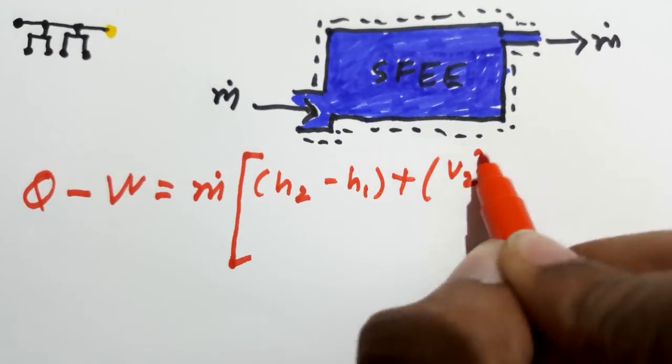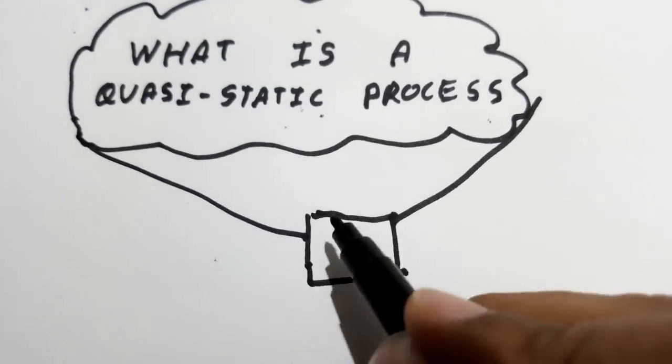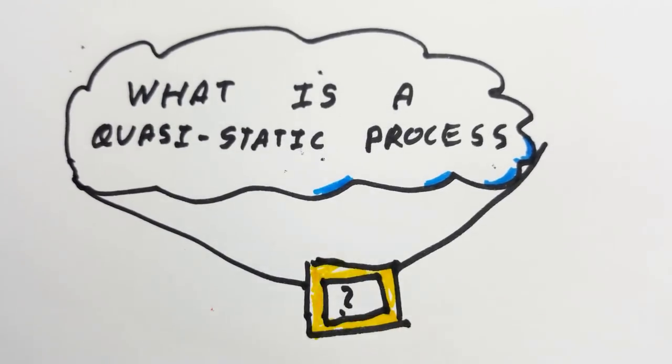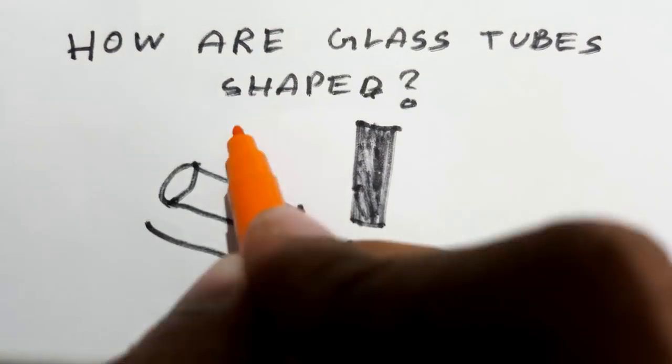Here comes the end of quick revision of what thermodynamics is. Finally, it's time for this episode's question: What is a quasi-static process? Also, it's time to answer our last episode's question: How are glass tubes shaped?